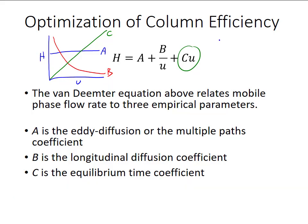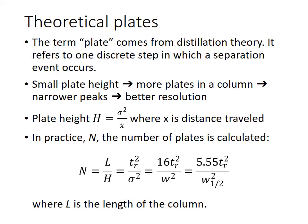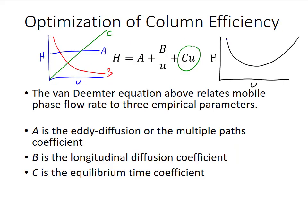Together, these three parameters contribute to a Van Deemter plot that looks like a curve with a minimum. In practice, we measure the height of theoretical plates from the retention time, width at half height, and column length at different flow rates, plot the resulting curve, and use the minimum from this analysis as our flow rate for optimal column efficiency.